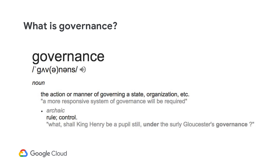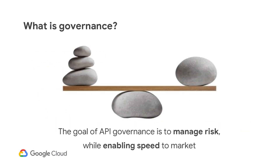Governance is defined as to rule and control. But in our fast-paced environment, where innovation is key to attaining that competitive edge, heavyweight ruling can control or slow down things, and progress can be impeded. Governance, when applied to the API-first model, is a balancing act. We need to manage risk while enabling speed and agility in order to meet the consumer's needs.